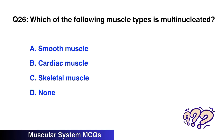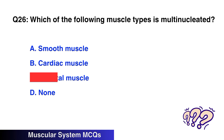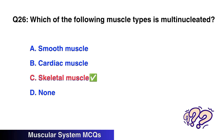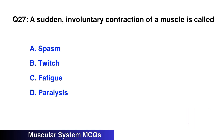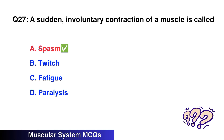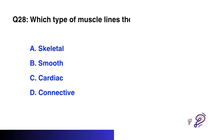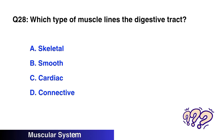Question No. 26: Which of the following muscle types is multi-nucleated? The right option is C: Skeletal muscle. Question No. 27: A sudden involuntary contraction of a muscle is called — the right option is A: Spasm.